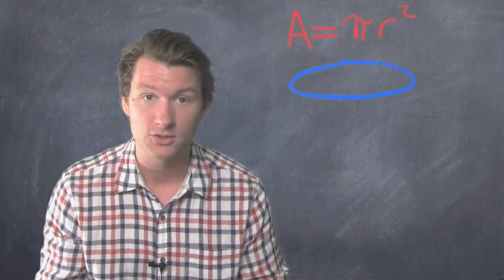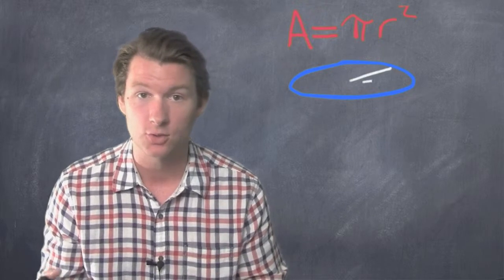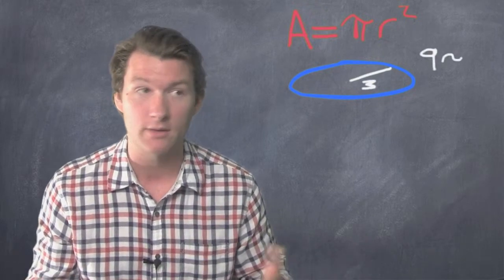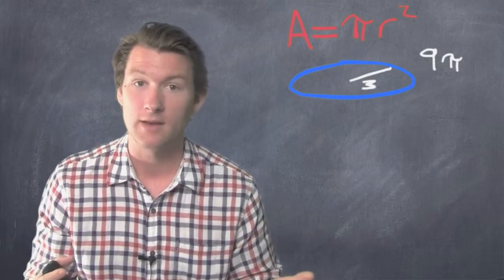You know how to find the area of a circle? Pi r squared. You've got a circle with the radius of three. The area would be pi r squared. Three times three is nine. Nine pi.